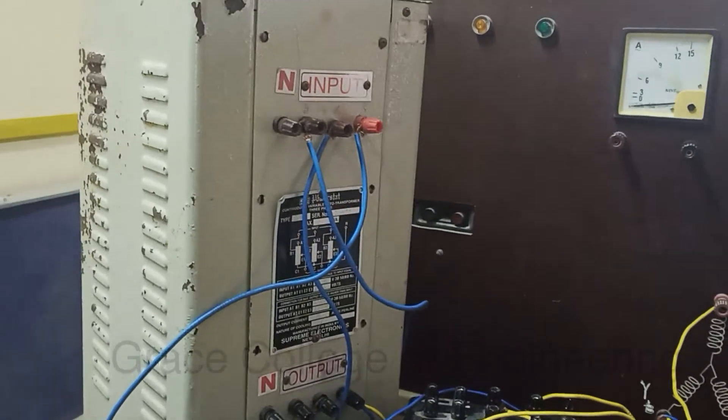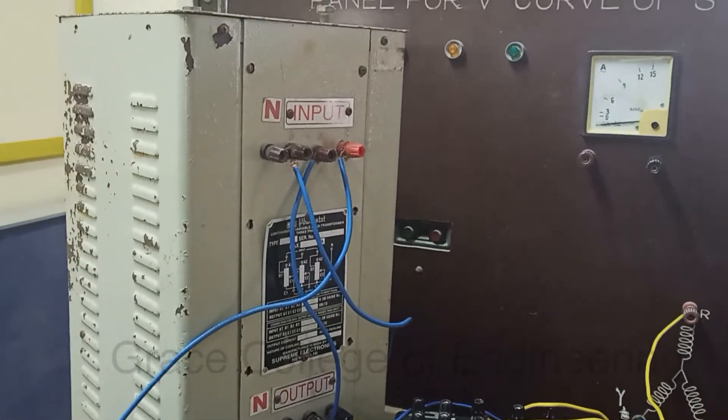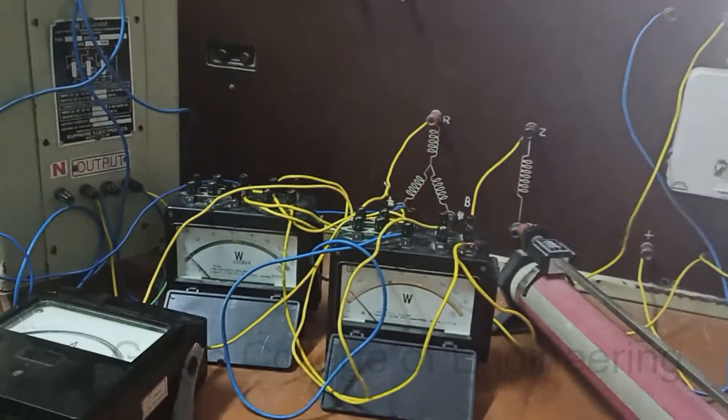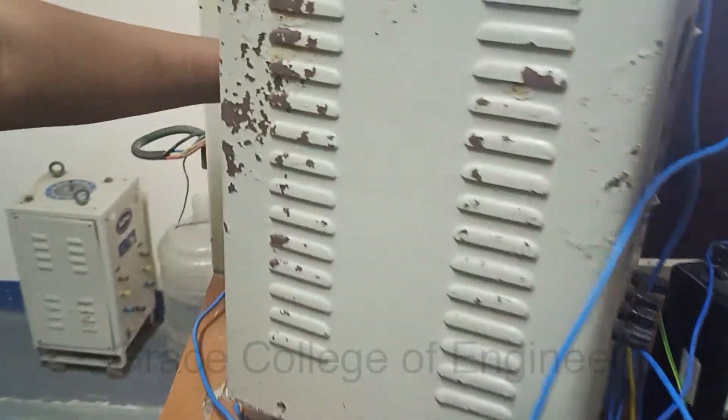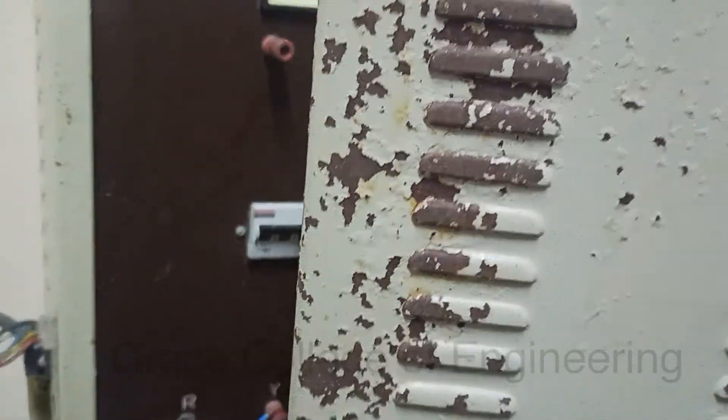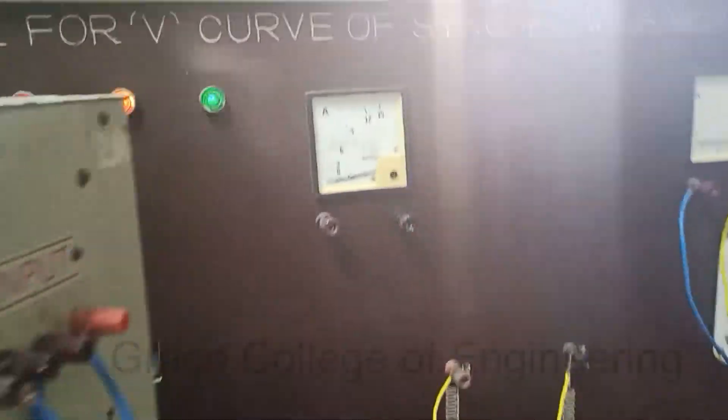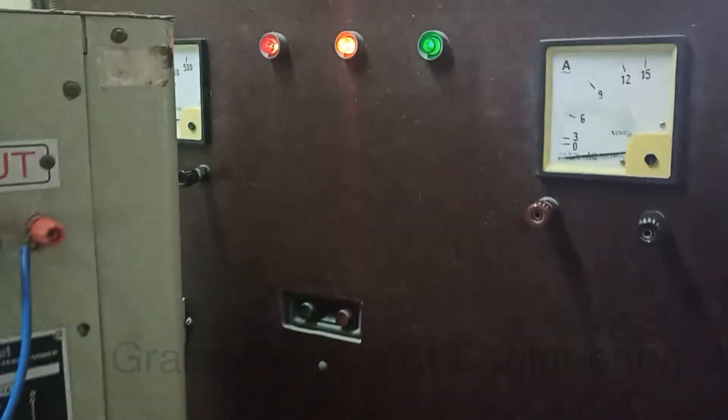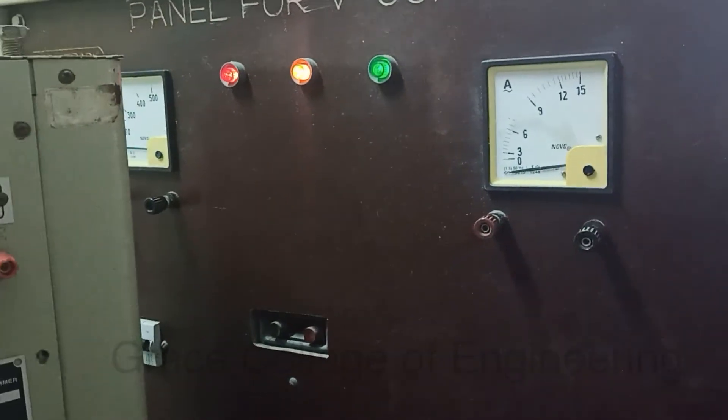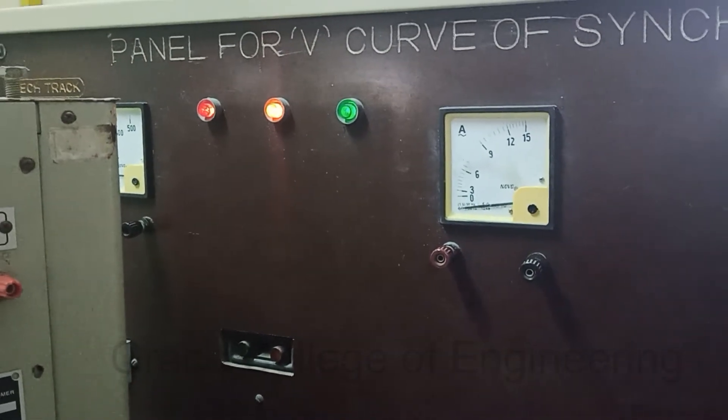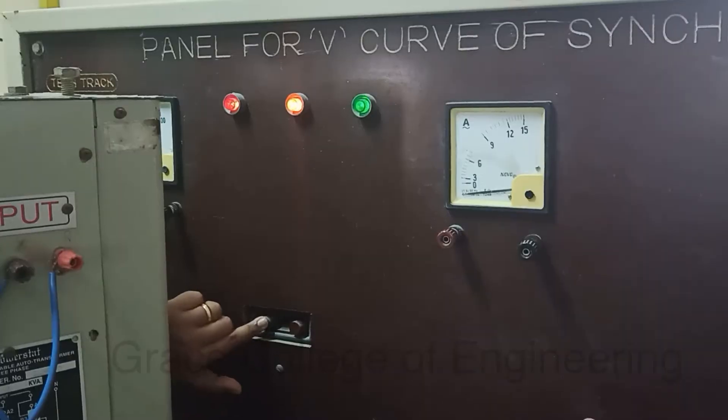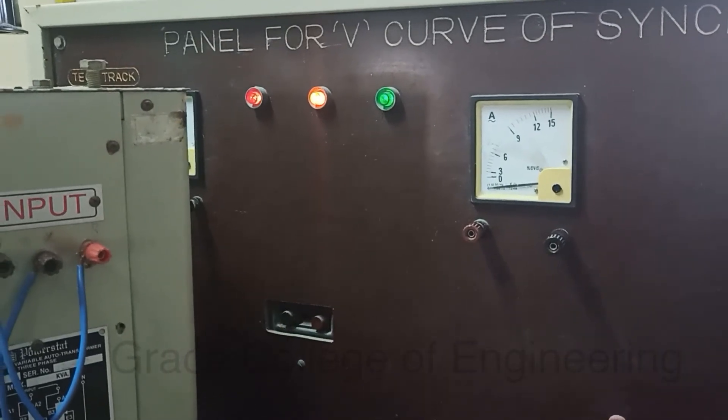This is the circuit as per the circuit diagram we connect the circuit. Now by varying the auto transformer we want to set the rated voltage.